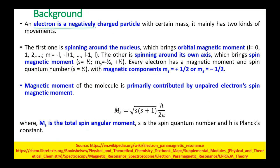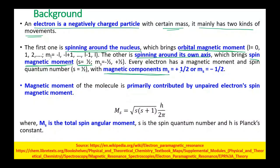An electron is a negatively charged particle with a certain mass, and it has two kinds of movements. The first is spinning around the nucleus, which brings about the orbital magnetic moment, given by l = 0, 1, 2, 3, with ml ranging from −l to +l. The second is spinning around its own axis, which brings about the spin magnetic moment given by s = 1/2, with the spin component ms taking discrete values of +1/2 or −1/2.